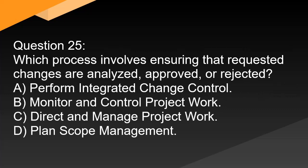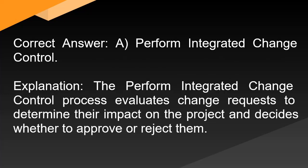Question 25: Which process involves ensuring that requested changes are analyzed, approved, or rejected? A. Perform integrated change control. B. Monitor and control project work. C. Direct and manage project work. D. Plan scope management. Correct answer: A. Perform integrated change control. Explanation: The perform integrated change control process evaluates change requests to determine their impact on the project and decides whether to approve or reject them.